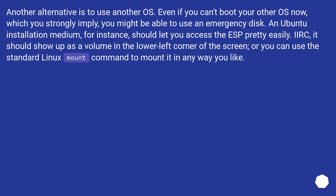Another alternative is to use another OS. Even if you can't boot your other OS now, which you strongly imply, you might be able to use an emergency disk. An Ubuntu installation medium, for instance, should let you access the ESP pretty easily. It should show up as a volume in the lower left corner of the screen, or you can use the standard Linux mount command to mount it in any way you like.